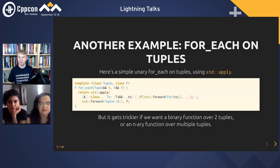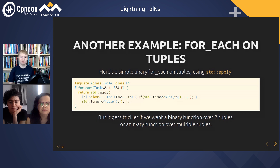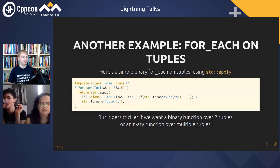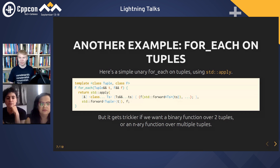Here's another example: for_each on tuples. If you just want a simple unary for_each on tuples, you can get that using a regular invocation of std::apply, with the familiar template syntax lambda having an argpack and then forwarding each thing in the argpack to the function. But if you want a binary function over two tuples, or potentially an n-ary function over more tuples, you need to do a little bit more work.